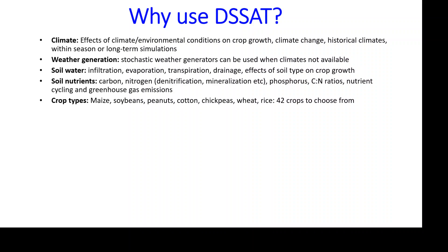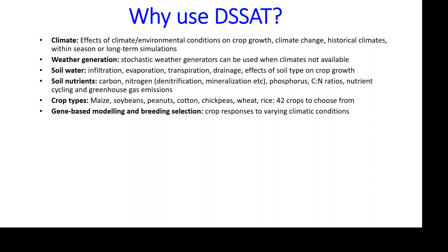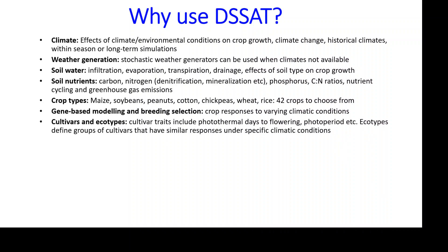It also handles soil carbon and greenhouse gas emissions, which is quite useful. It supports 42 different crop types, making it very diverse. It features gene-based modeling and genetic selection, allowing manipulation or selection of crop responses to environmental conditions. It has cultivar and ecotype coefficients — cultivars covering phenological coefficients like photothermal days to flowering and photoperiod, while ecotypes are groups of cultivars with similar responses to certain environmental conditions.